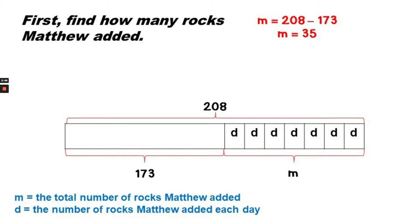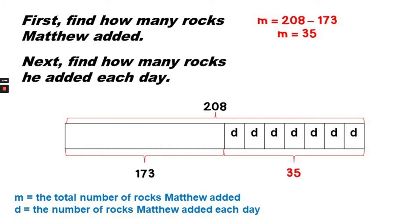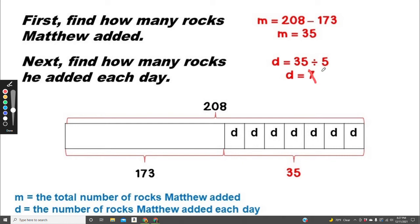Next, we need to find out how many rocks he added each day. So he added 35 in all over seven days. We'll need to divide 35 into seven equal groups to find D, because 35 divided by seven equals five.